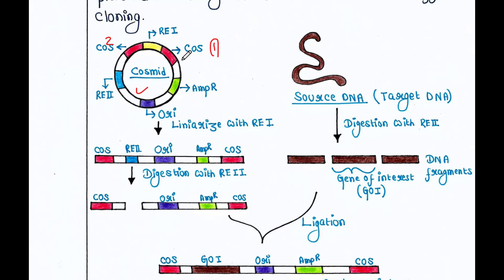In between the cos sites, there is one RE1 — a restriction enzyme digestion site — where restriction enzyme 1 can cut. It also has the ampicillin resistance gene, ORI, and one more restriction enzyme cut site, RE2.